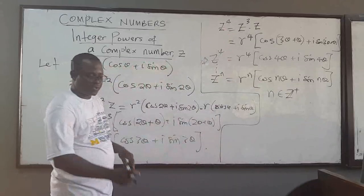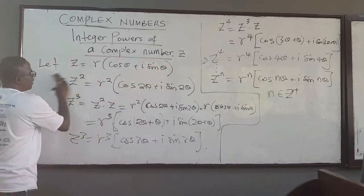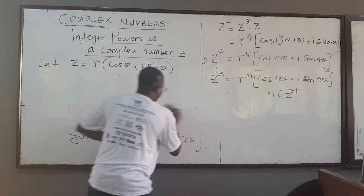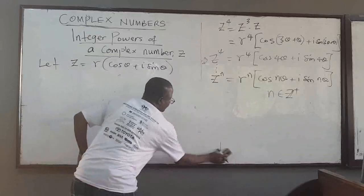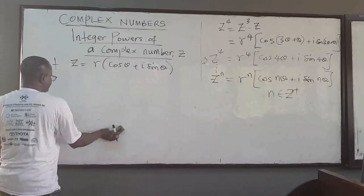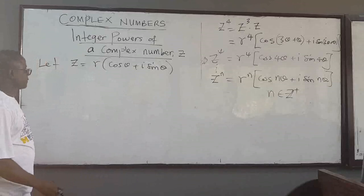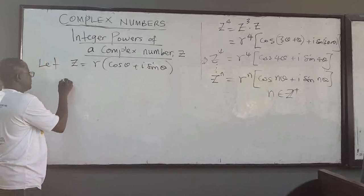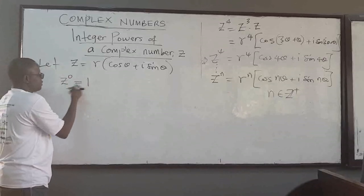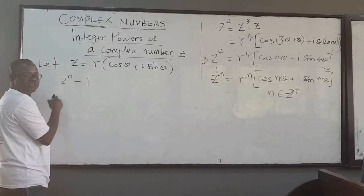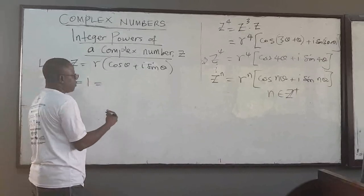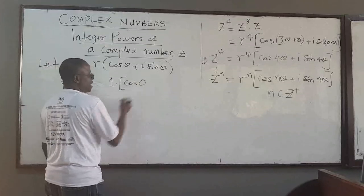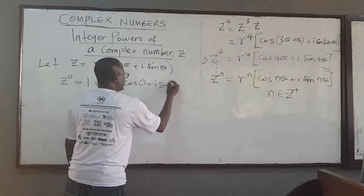We can do that for negative integers as well. Let's establish it for negative integers and then generalize to all integers. First, z⁰ is of course 1 (provided z ≠ 0). The number 1 can be written in polar form as cos 0 + i sin 0, since cos 0 = 1 and sin 0 = 0. This shows how the relationship works for n = 0.